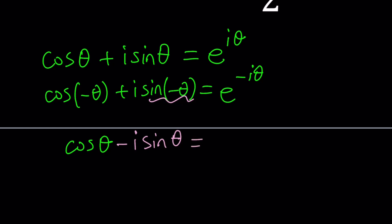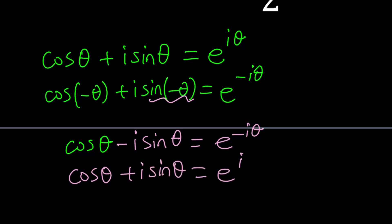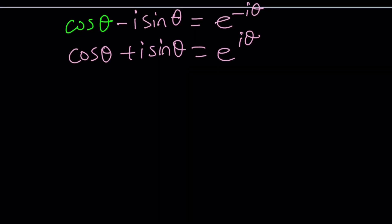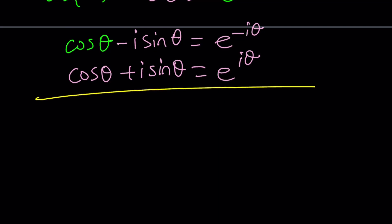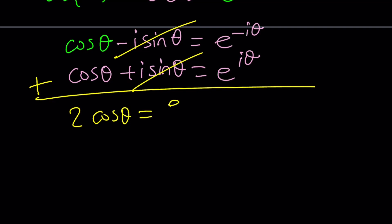On the right-hand side we're going to have two exponents. Let's copy the first equation, and then we'll add these two equations together. When you add these two equations, i sine theta is going to cancel out and we're going to end up with 2 cosine theta equals e to the i theta plus e to the negative i theta. Divided by 2, this is the formula.